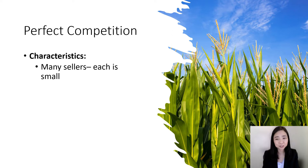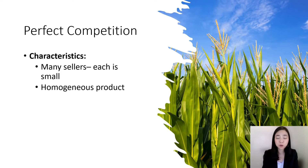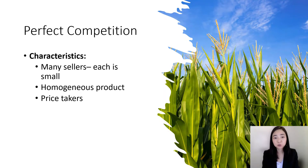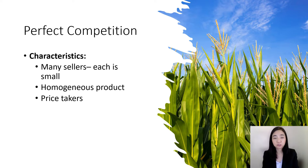First of all, we have many sellers. Each is small and insignificant. The firms are all producing a homogeneous product, so there is no product differentiation whatsoever. And because products are homogeneous, each producer is a price taker — the price is determined by the market demand and supply, and each firm will just take the price as is.